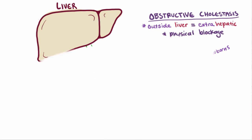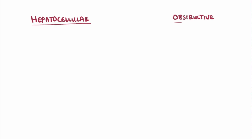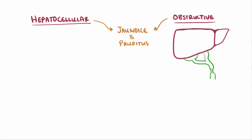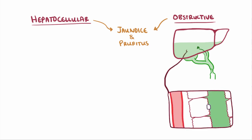A pretty common clinical finding of somebody with either hepatocellular or obstructive cholestasis is jaundice and pruritus. In obstructive cholestasis, bile accumulates in the liver and slowly seeps into the serum. When those bile ducts are obstructed, the pressure in the ducts increases, which causes bile to leak through the tight junctions between hepatocytes, into the interstitial space and into the serum, meaning the individual components of that bile will get into the serum as well.